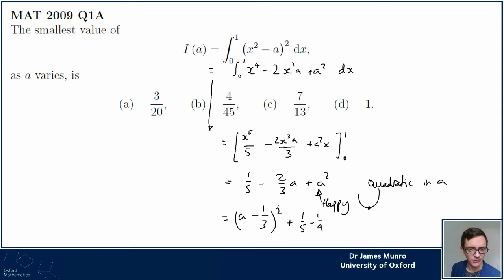So here it's this square thing, a minus 1/3 squared, plus 1/5 minus 1/9 to make that 3rd squared go away. I just need to work out 1/5 minus 1/9, put that over a common denominator, and I've got 9 minus 5 is 4 over 45. Ah brilliant, it's B, fantastic.